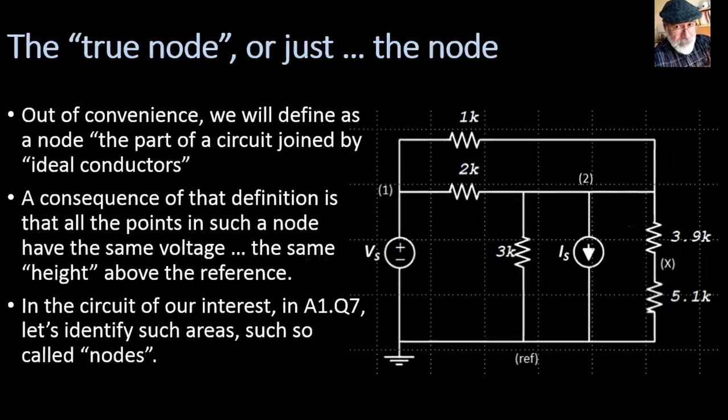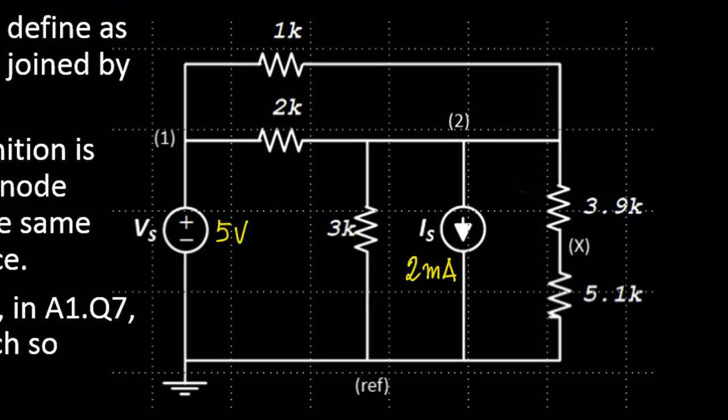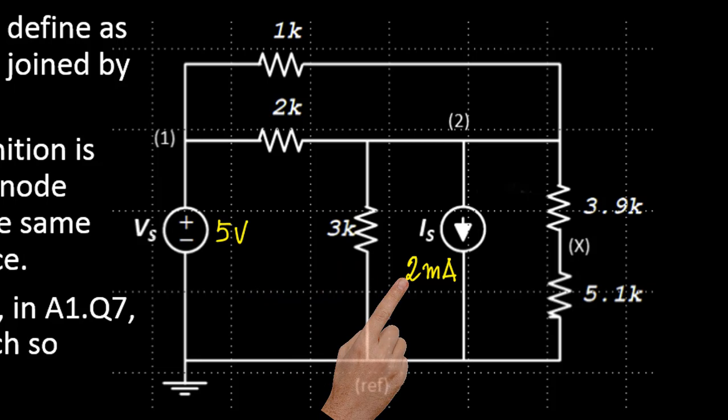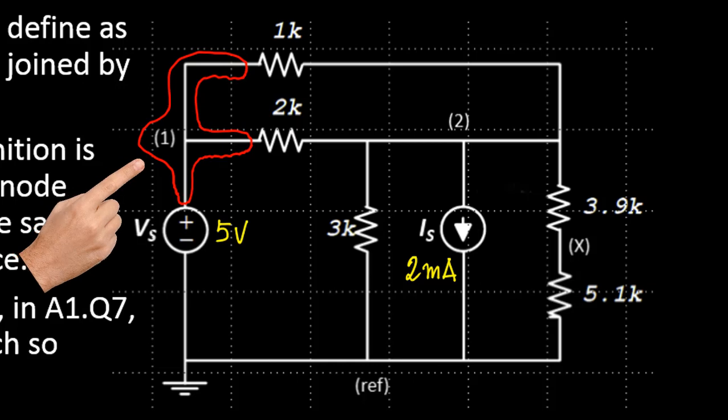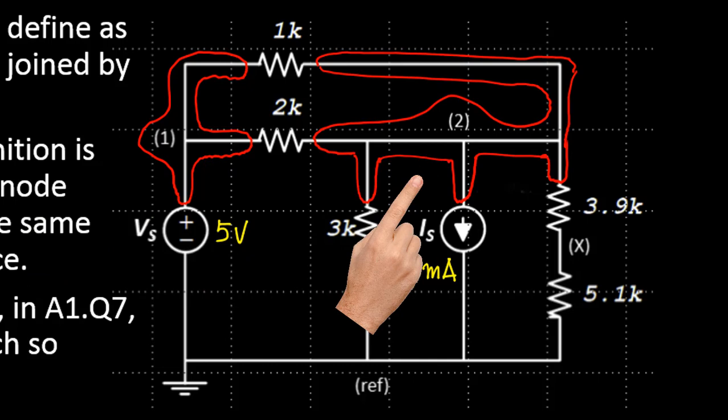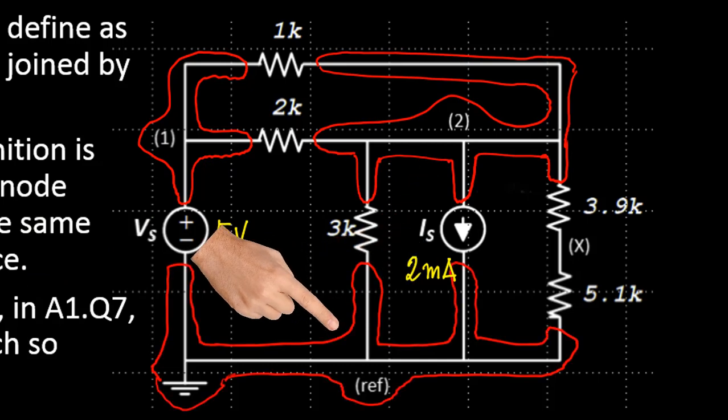But before that, let me give you the value of the ideal sources. VS is a 5V source and IS is a 2mA current source. Now, let's identify the nodes. Remember, areas in the circuit that are joined by ideal conductors. This one, yeah. I'm going to call that node 1, for lack of a better name. And this is node 2. And at the bottom, there is another node yet. But that has been given to us as a reference for our solution. So, there is a reference. The voltage of that reference node by convention is 0.